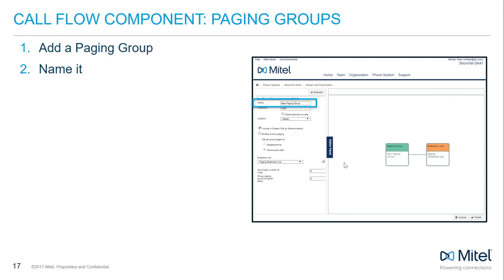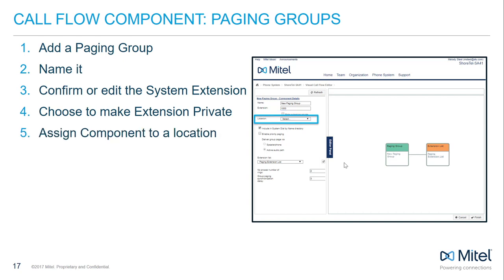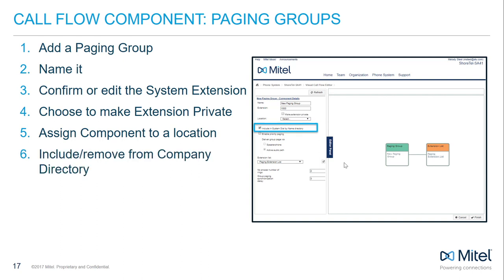Name the paging group something unique and confirm or edit the assigned system extension. You can check the Make Extension Private box only if you wish to remove this component extension from the company directory. Assign the component to an existing location, and determine whether you want to include this group in the System Dial By Name directory, which makes it accessible to outside callers.